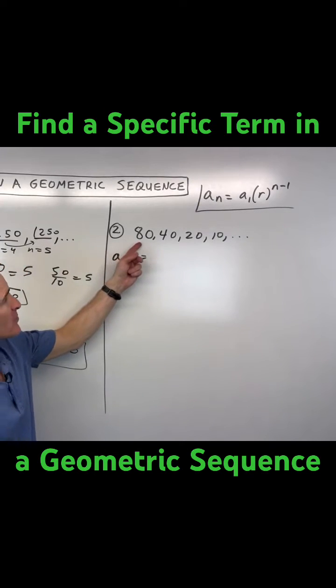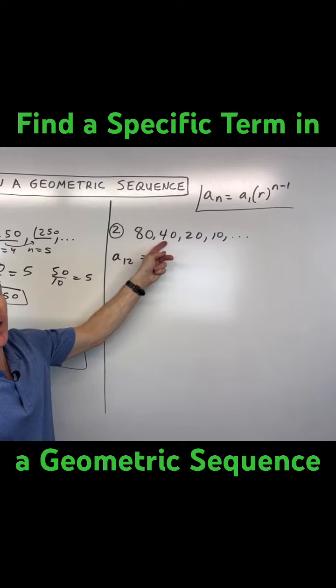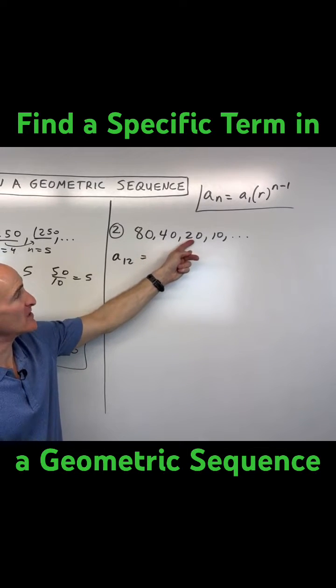Some students might say, well, I'm subtracting 40. 80 minus 40 is 40. But you see how it doesn't continue? 40 minus 40 would be 0, not 20.